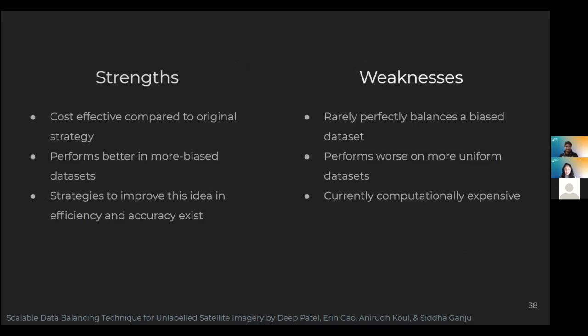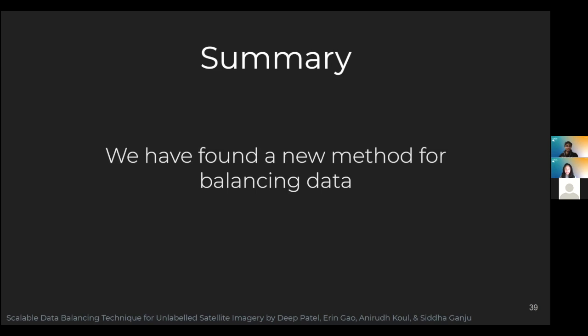The diversity algorithm provides a cost-effective method of balancing unlabeled and unbalanced datasets. However, it does have some weaknesses which we hope to address. It doesn't generate perfectly balanced datasets and could slightly offset a uniform dataset. Furthermore, it's currently computationally expensive, but we aim to research ways to improve its speed while improving its efficacy. We have found a new method for balancing datasets — one that does not entirely rely on labels, but instead on the power of embeddings and diversity. So the scientists who want to create their hurricane classifier can now do so using the diversity algorithm on the embeddings of the Worldview dataset.